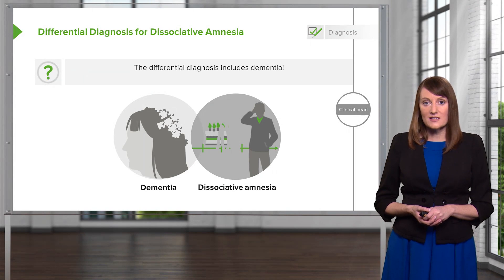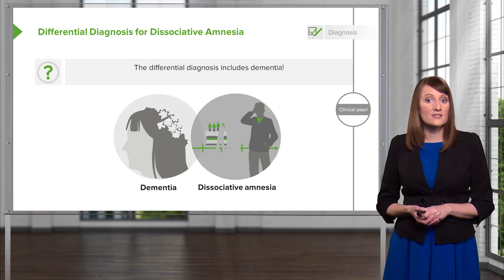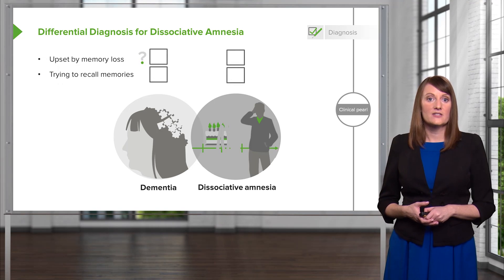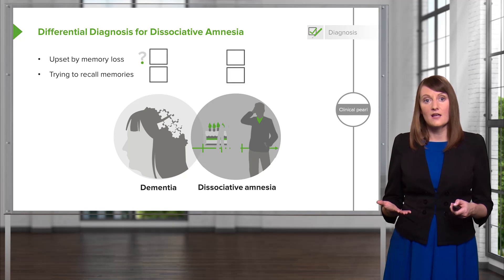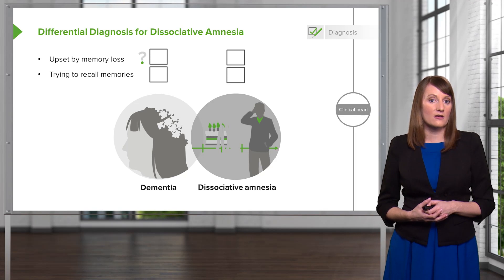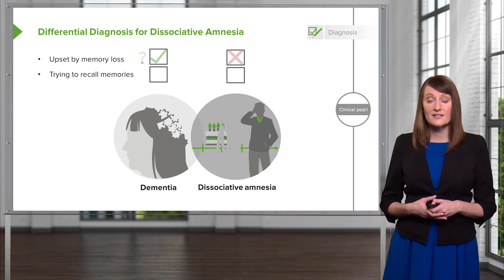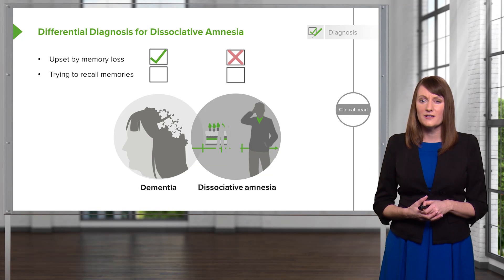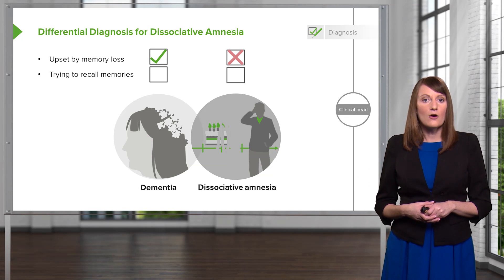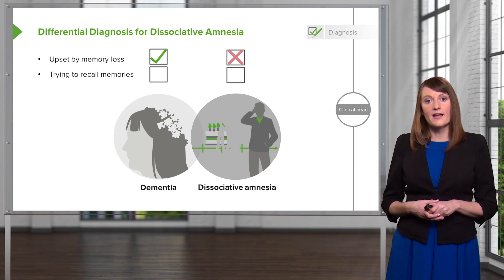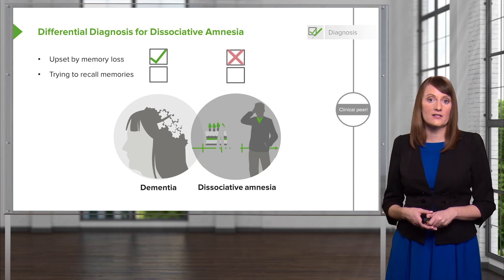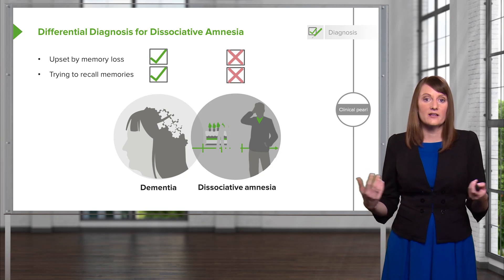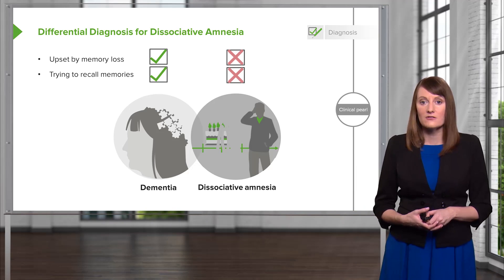The differential diagnosis for dissociative amnesia includes dementia. What's the difference between the two? In dementia, the patient is going to be very upset by their memory loss, whereas in dissociative amnesia, despite the inability to recall information, people tend not to be too upset. In dementia, patients really try to recall their memories, whereas in dissociative amnesia, patients appear quite aloof even when asked to recall details about their life.